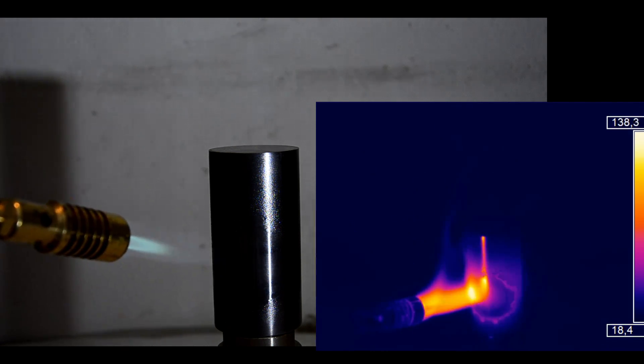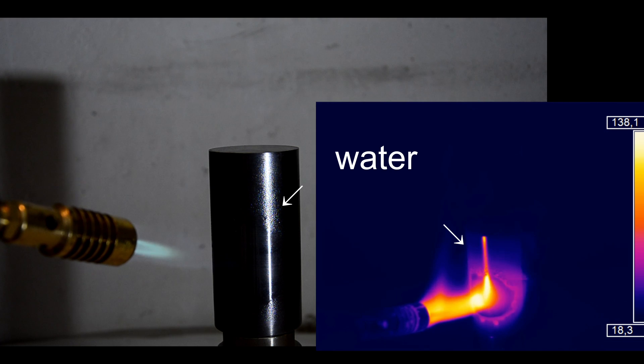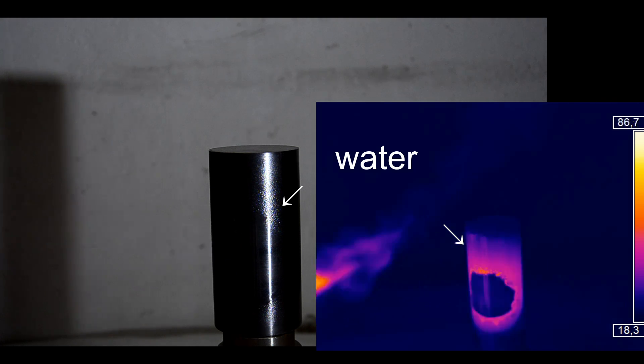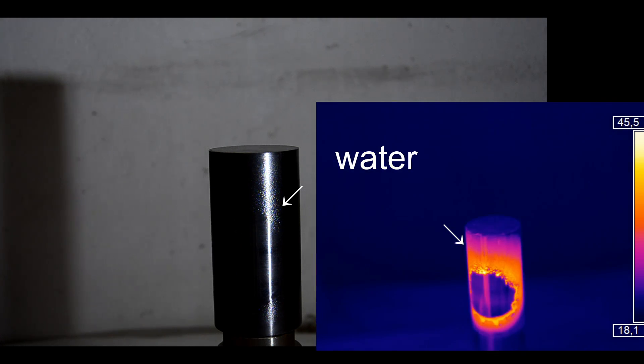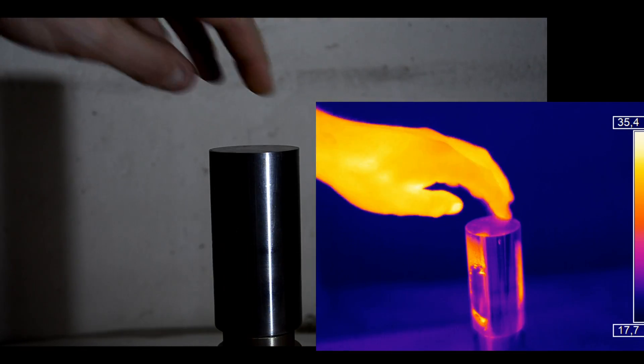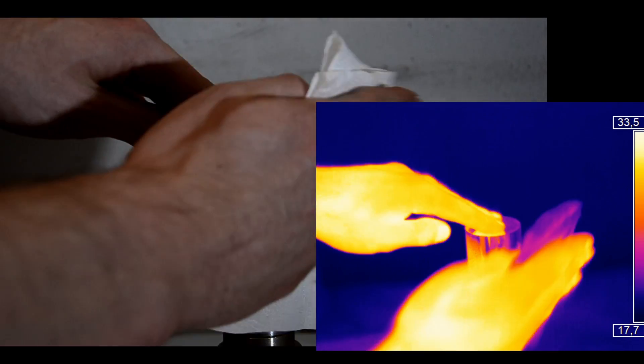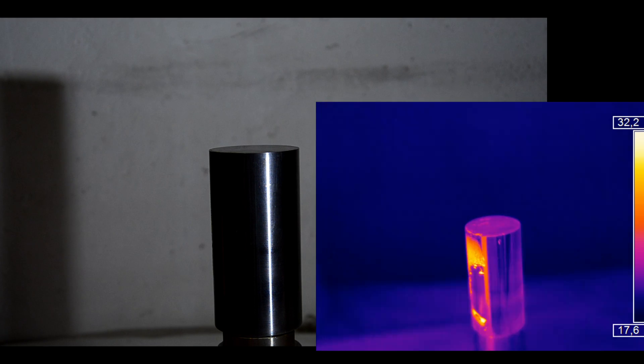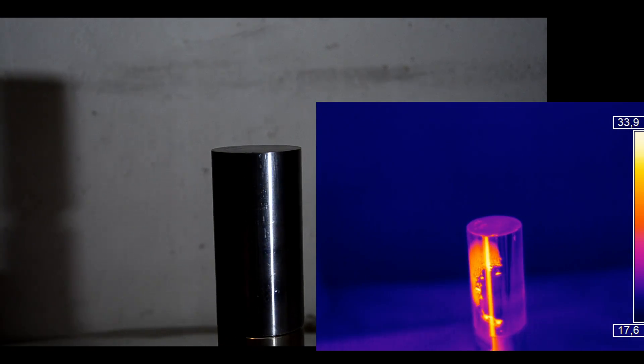What you can see is the condensed water with a much higher emissivity than the metal itself. Also, if we turn the cylinder, you can see how hot it really is by looking at the sticker with a high emissivity again.